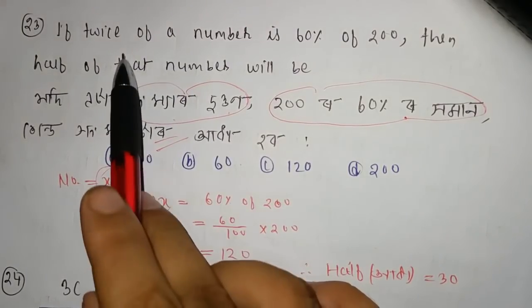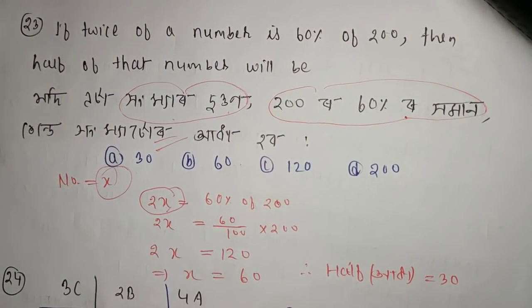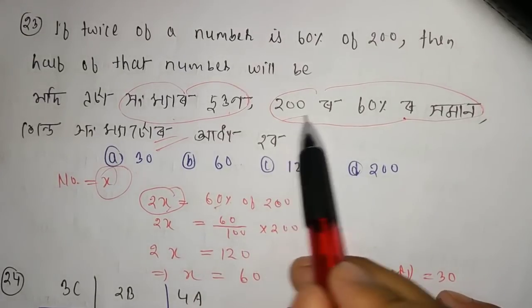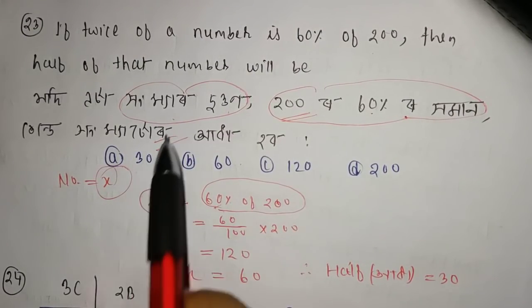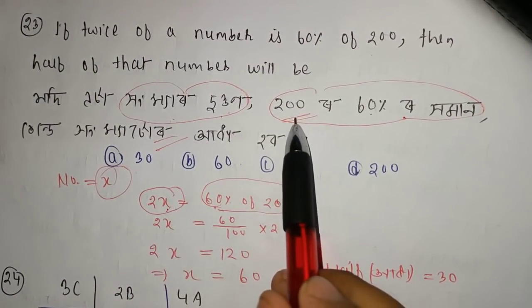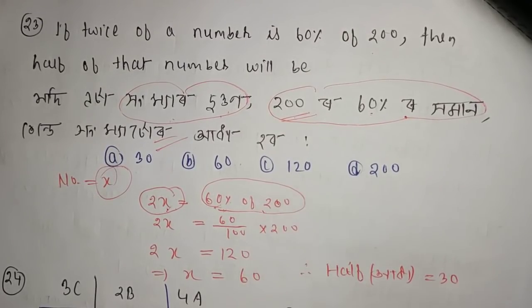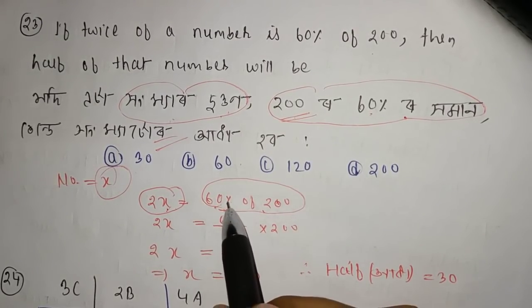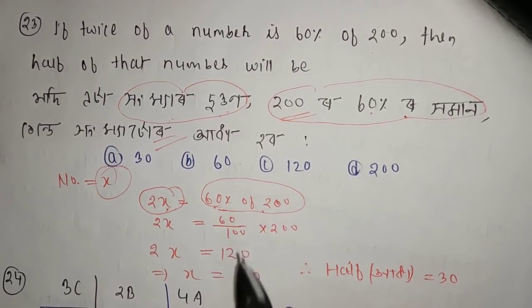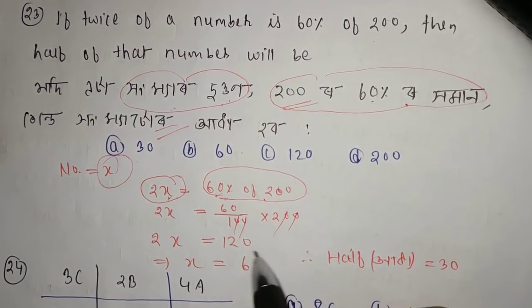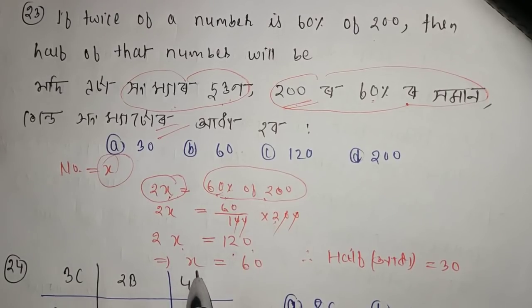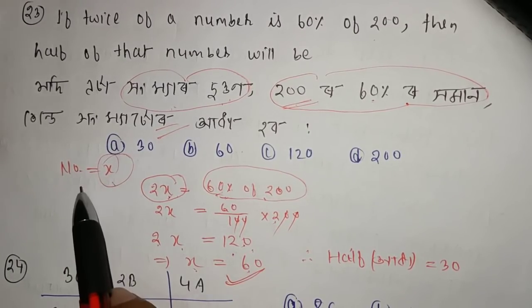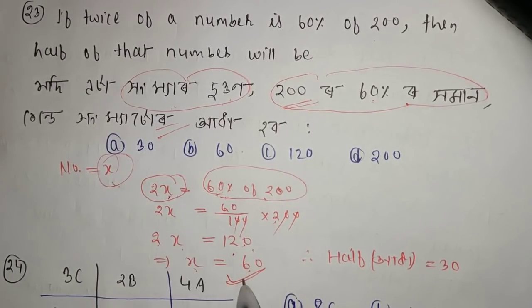So 2x equals 60% of 200. Write 60% of 200: to calculate the percentage, multiply 60 by 200 and divide by 100. So 2x is equal to 120, therefore x equals 120 divided by 2, which equals 60.